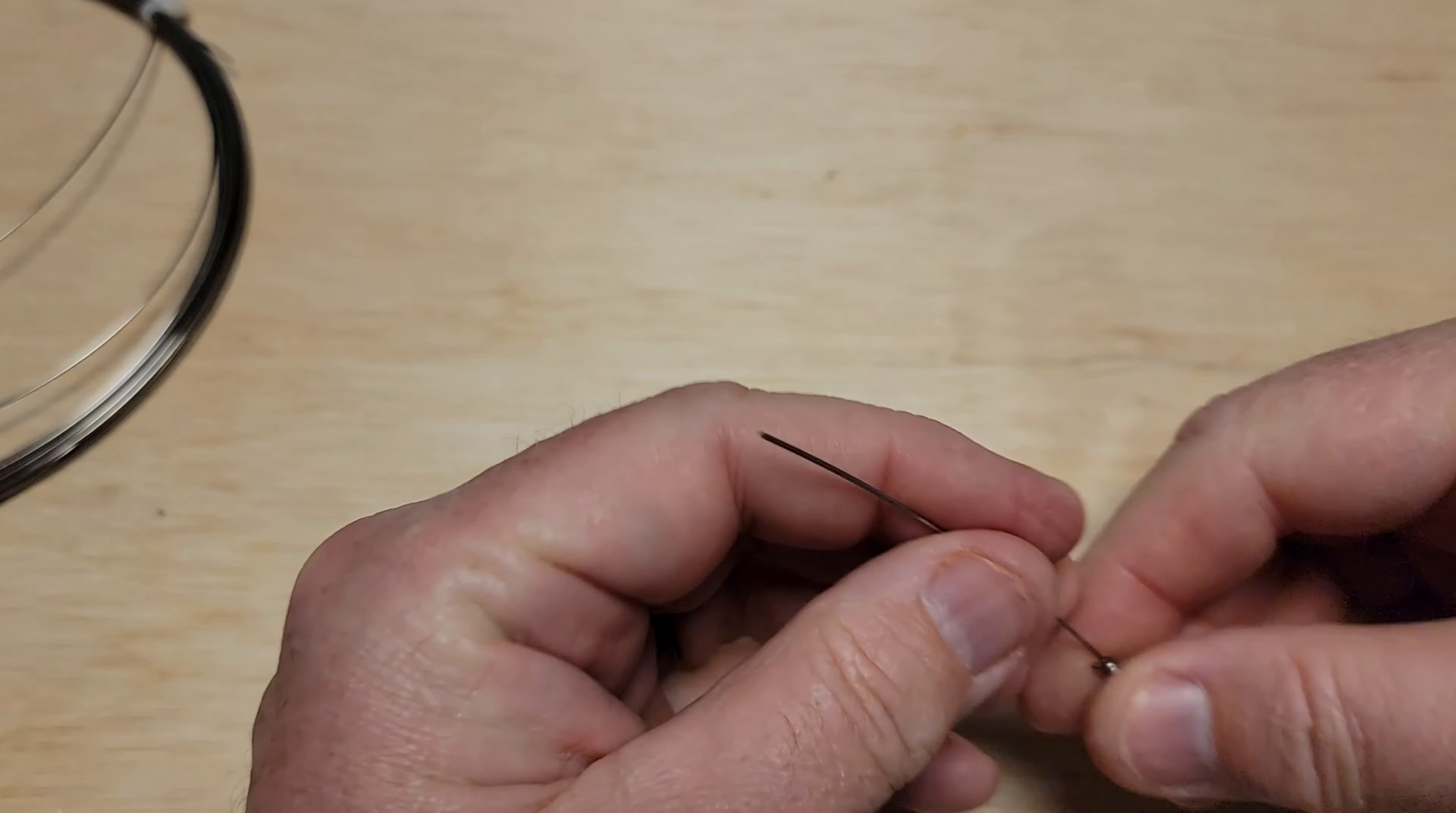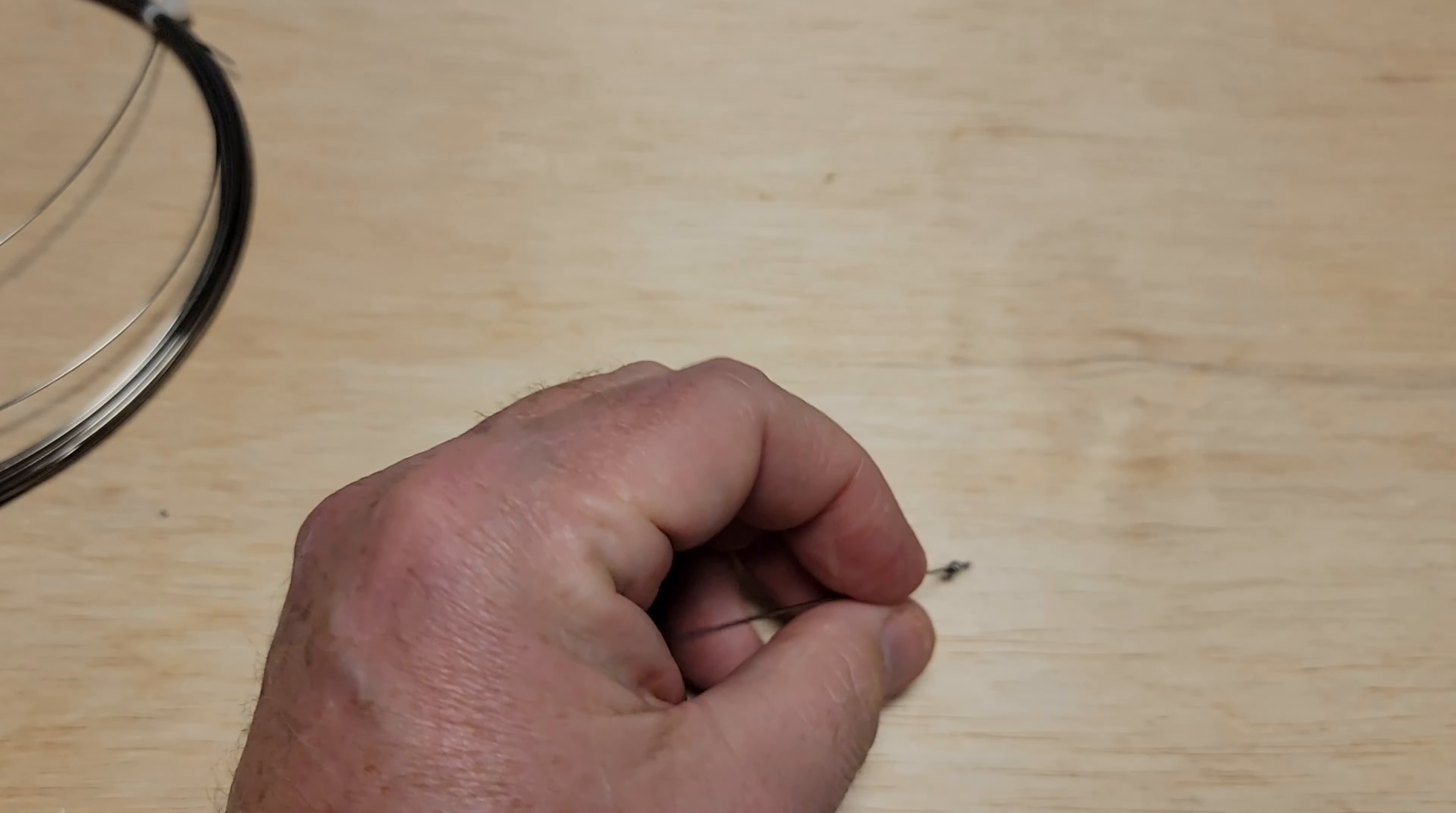With a split ring, what's nice is you can change out your hooks if they get dull, if they get bent too much, whatever. Full disclosure, I've really never kept a lure long enough that I've had to change out the hooks very often. Usually it's from getting bent by pulling them loose from a rock or whatever.